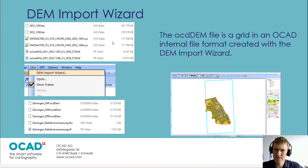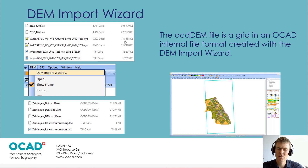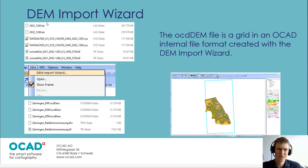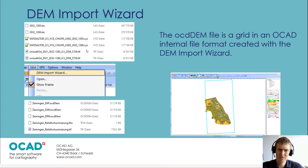How does it work in OCAD? In OCAD, there is the DEM Import Wizard. In this DEM Import Wizard, you can add input data — this can be LiDAR files, these LAS files, it can also be some ASCII files, or GeoTIFFs — so we have different file formats which can serve as input.